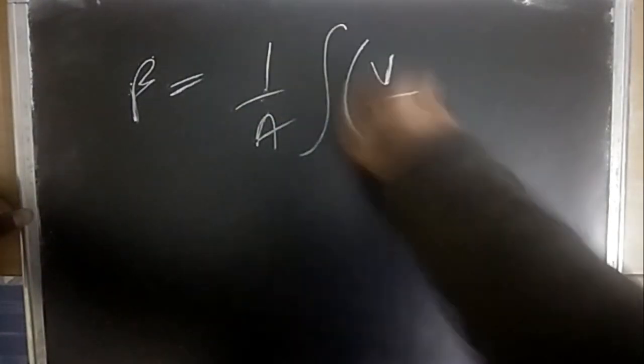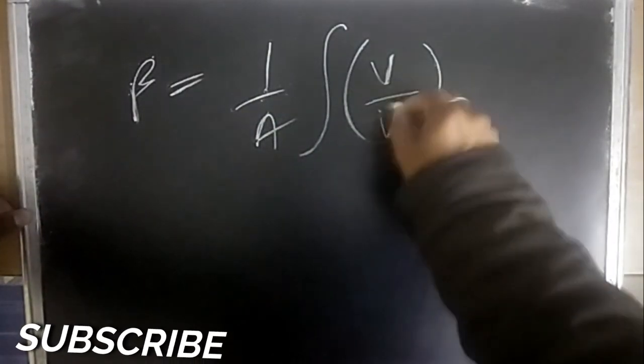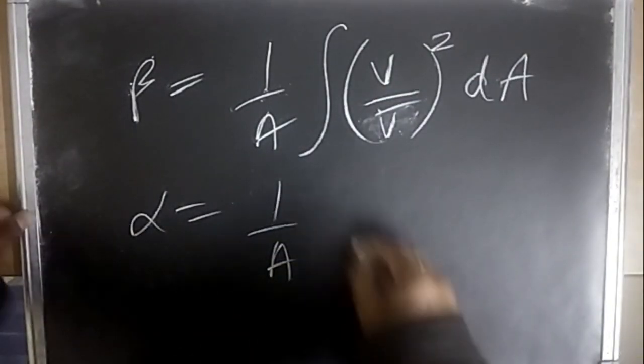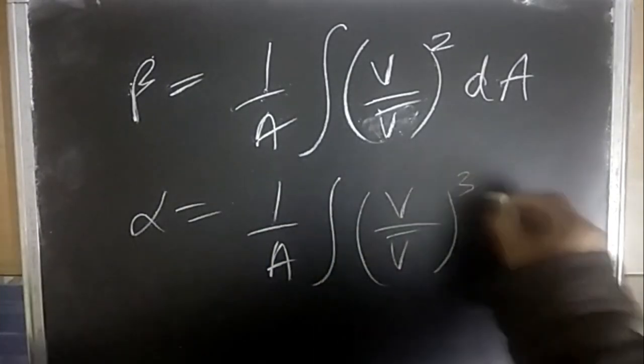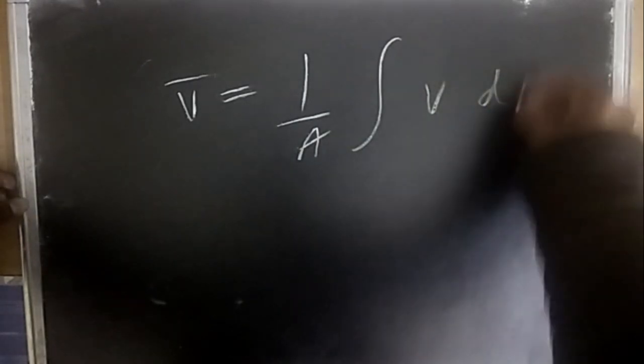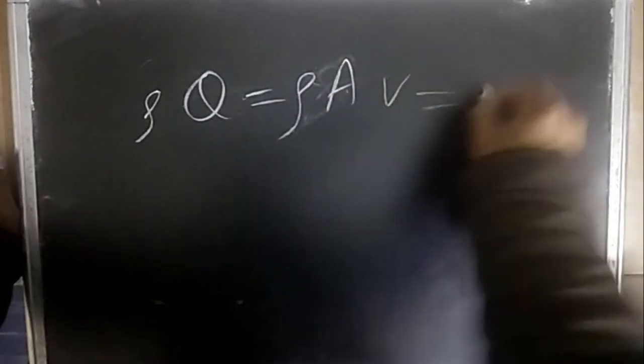The momentum correction factor is β = (1/A) ∫(v/v_avg)² dA, and the kinetic energy correction factor is α = (1/A) ∫(v/v_avg)³ dA. The average velocity is v_avg = (1/A)∫v·dA. Volumetric flow rate Q = A·v; if multiplied by ρ, this gives the mass flow rate.